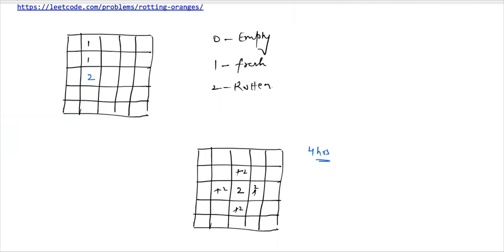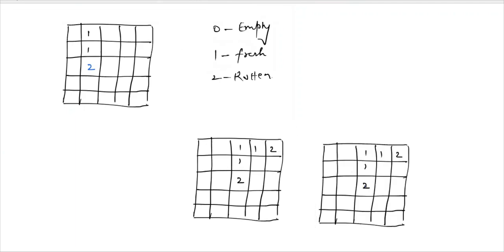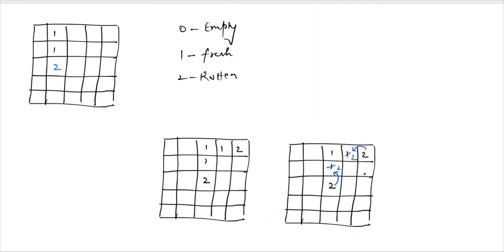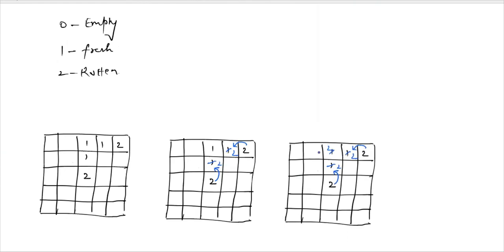Now consider a matrix like [1, 1, 1, 2]. After one hour, the rotten orange rots the nearby orange. After two hours, the next one rots. So after two hours the entire matrix will be rotten.